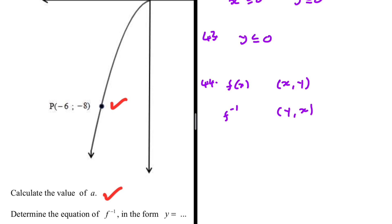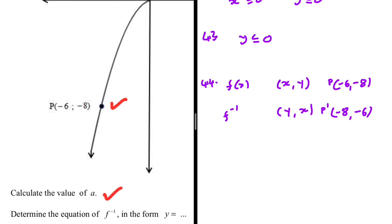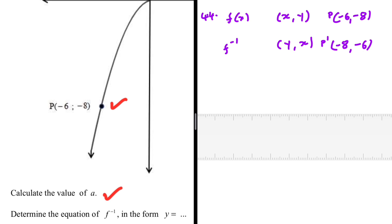On f(x) our point P had coordinates (minus 6, minus 8). So on f inverse, point P prime should be (minus 8, minus 6). When you substitute minus 8 into the inverse it gives minus 6, because substituting minus 6 into f gives minus 8. The inverse essentially maps the range back to the domain instead of taking elements of the domain to the range.